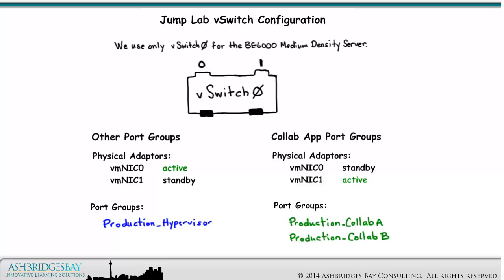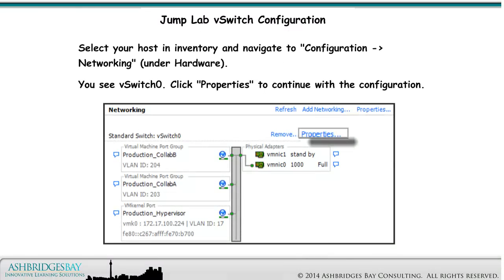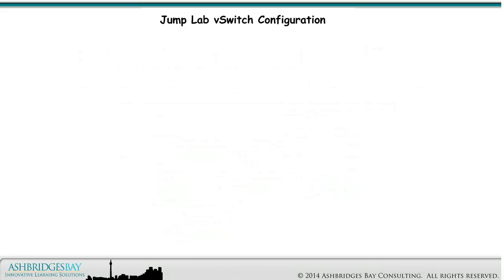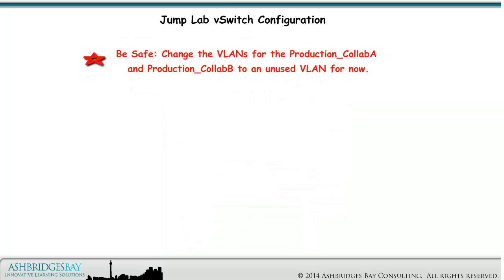Here are the port groups configured on Day 1: the VM kernel port group named Production Hypervisor, and the Production Collab A and Production Collab B port groups. We need port groups defined for the Routed Enterprise Network VLAN, the Builds Collab A and Builds Collab B VLANs, and the Pre-Production Collab A and Collab B VLANs. Select your host in Inventory and navigate to Configuration Networking under Hardware. You see vSwitch 0 — click Properties to continue with the configuration. On the NIC teaming tab, set the values as we discussed earlier. You want to be safe: change the VLANs for the Production Collab A and Production Collab B to an unused VLAN for now. If a VNIC is accidentally put in a Production VLAN, it won't be able to do any harm.